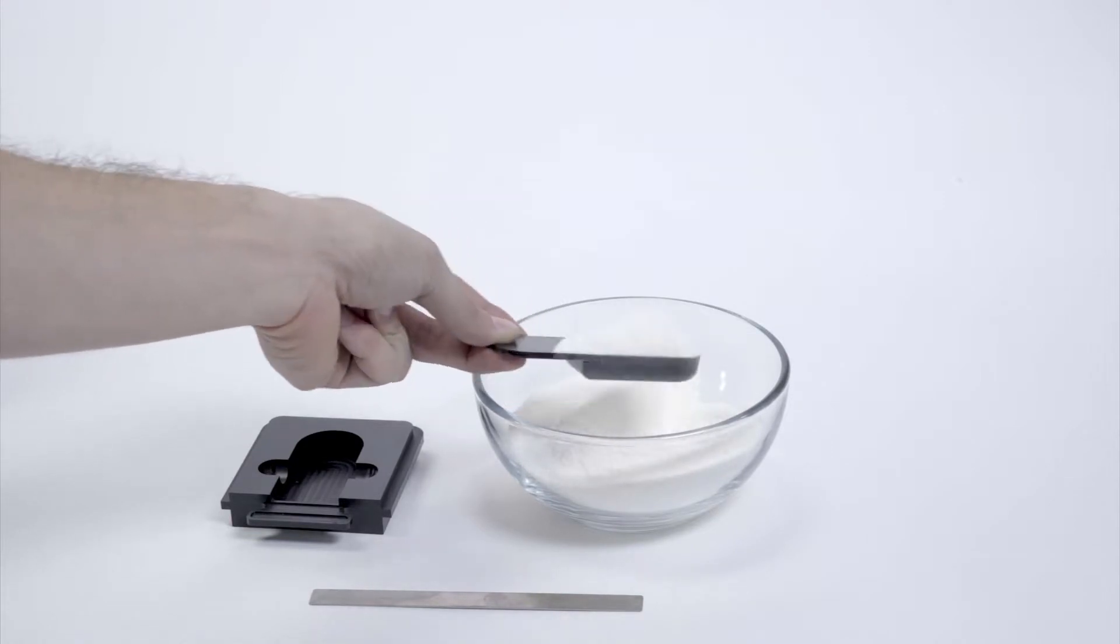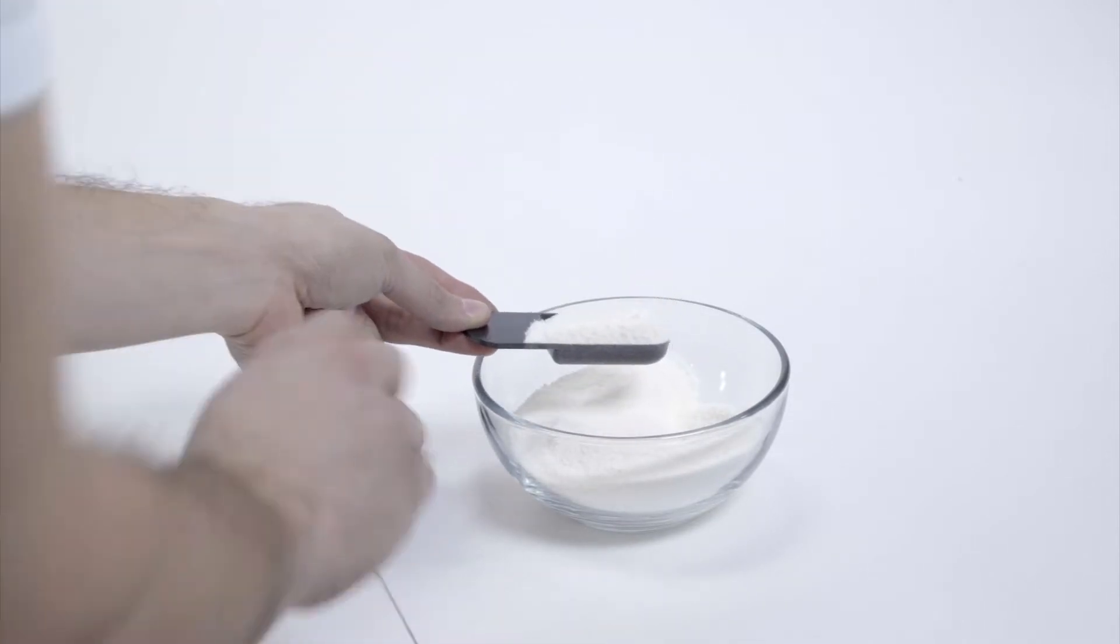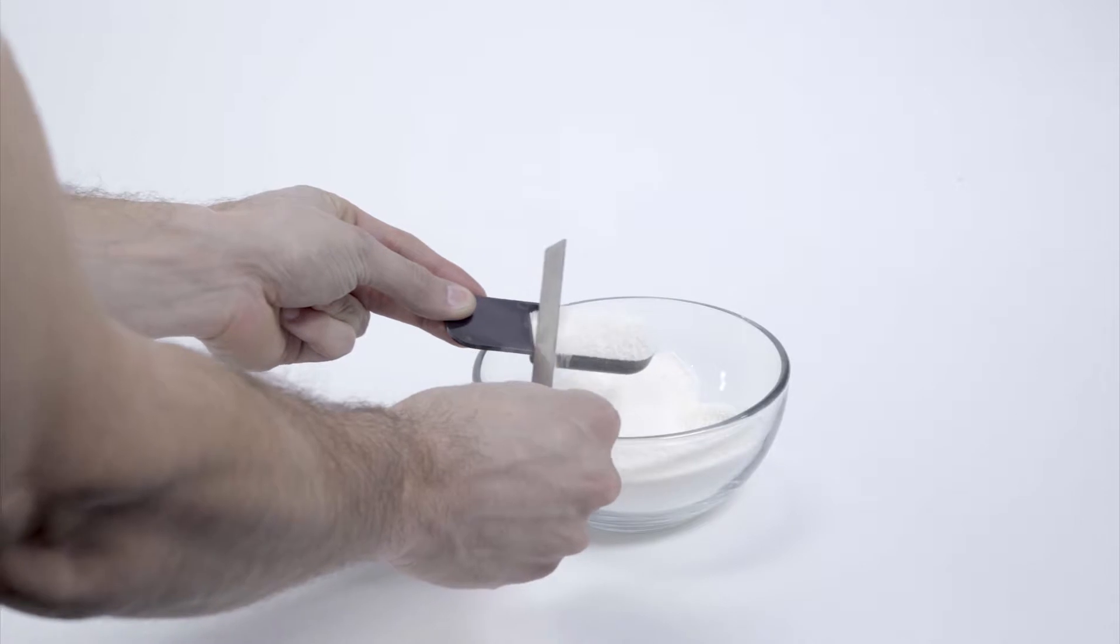Powders or granules can be put into a spoon and leveled, and the spoon placed into the sample holder. The material is correctly prepared for measurement.